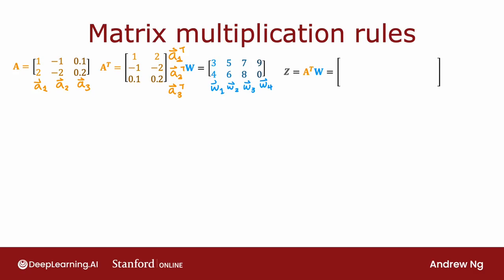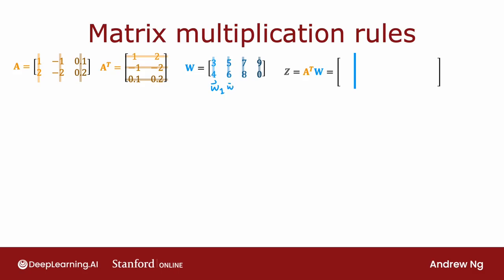Let's look at how to compute A transpose times W. I'm going to draw vertical bars with different shades of blue and horizontal bars with different shades of orange to indicate which elements of Z — that is A transpose W — are influenced by the different rows of A transpose and which are influenced by the different columns of W. For example, W1, the first column of W indicated by the lightest shade of blue, corresponds to the first column of Z. The second column W2 affects the second column of Z, and so on for the third and fourth columns.